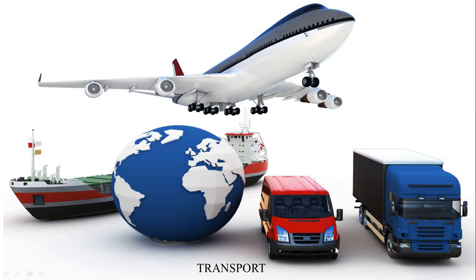First of all we will try to understand about transport. Transport is the means by which people and goods move. In the early days, it took a great deal of time to travel long distances. People had to walk and used animals to carry their goods. Invention of the wheel made transport easier. With the passage of time, different means of transport developed, but even today people use animals for transport. The early traders from other countries used to take several months to reach India. They took either the sea route or the land route.